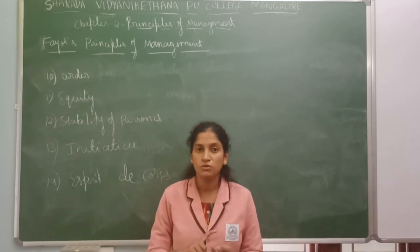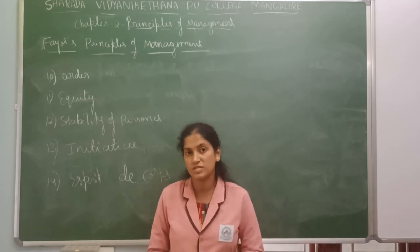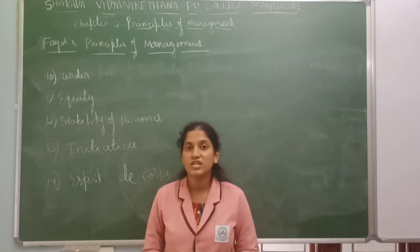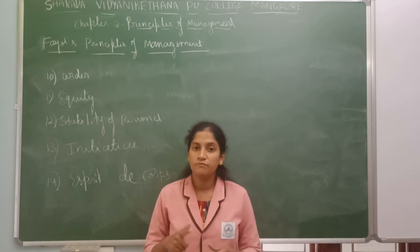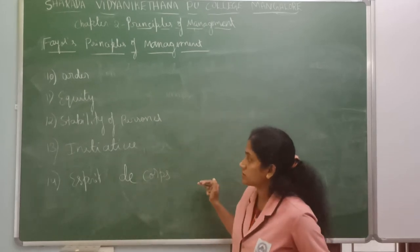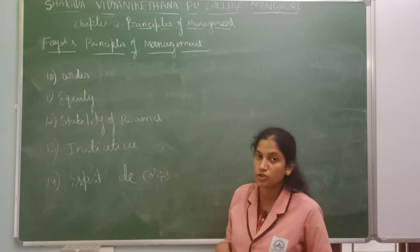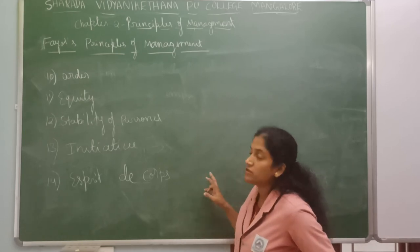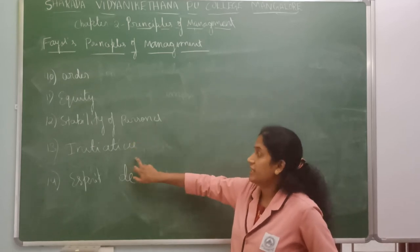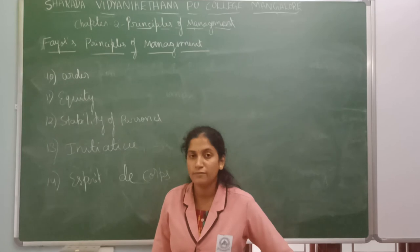To recap, the 14 principles we have studied are: division of work, authority and responsibility, discipline, unity of command, unity of direction, centralization and decentralization, order, equity, subordination of individual interest to group interest, scalar chain, stability of personnel, initiative, esprit de corps, and remuneration of employees. These are the 14 principles given by Henry Fayol.